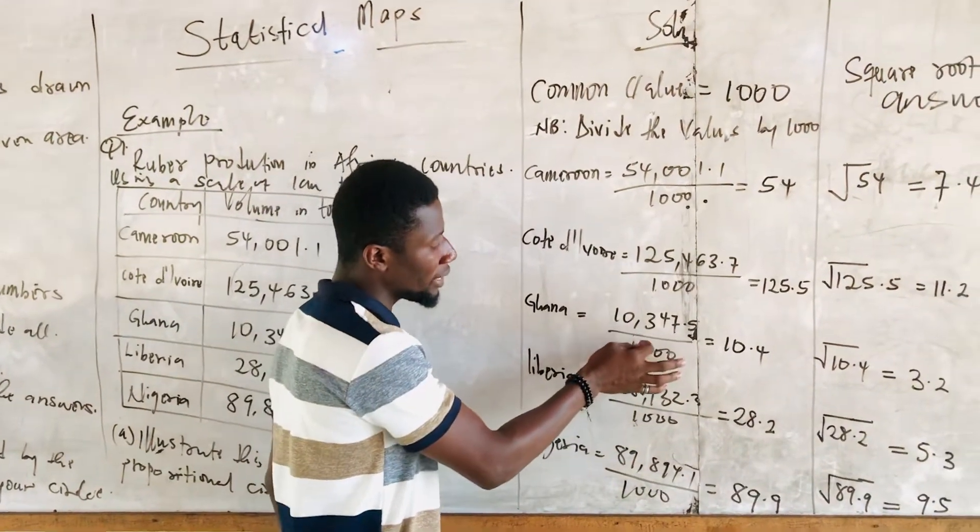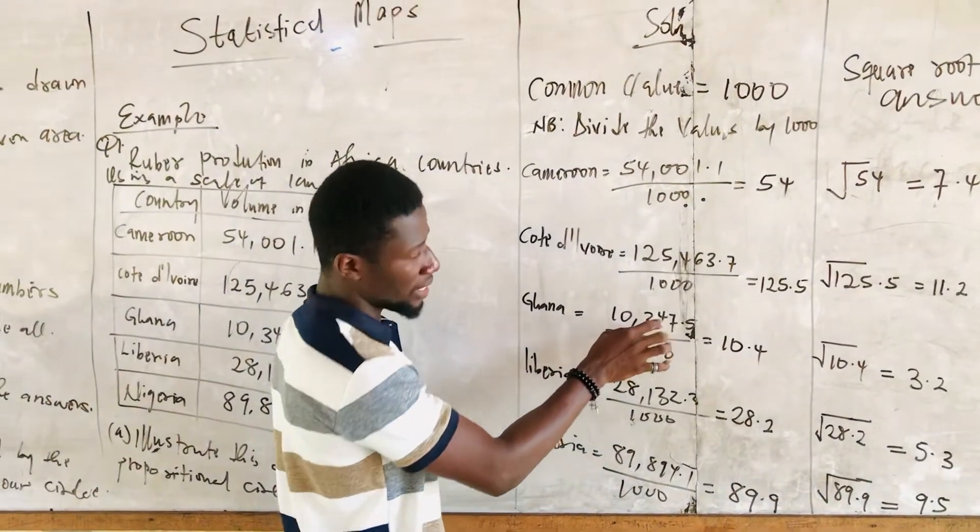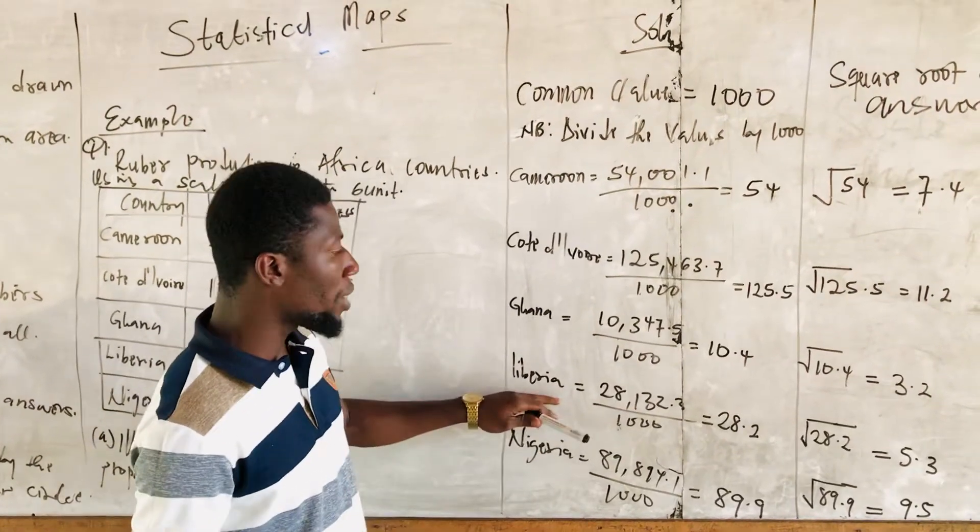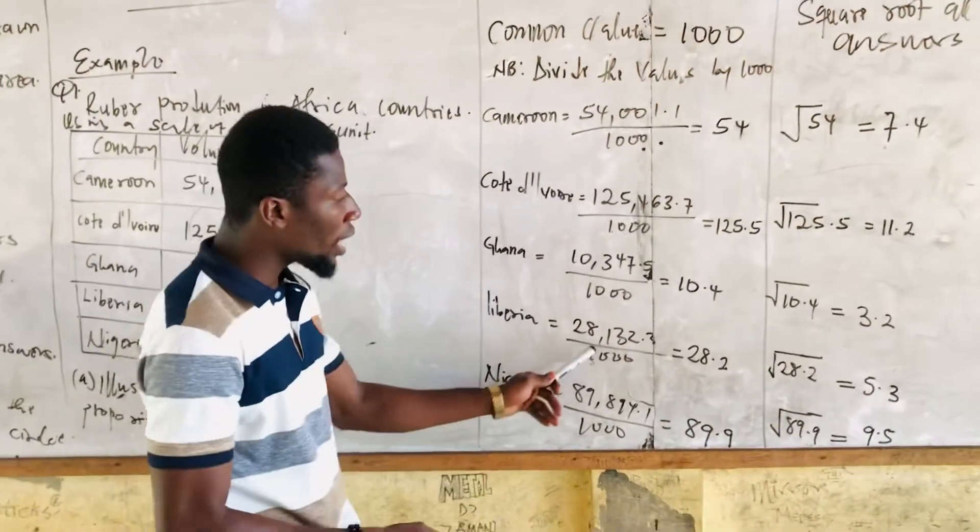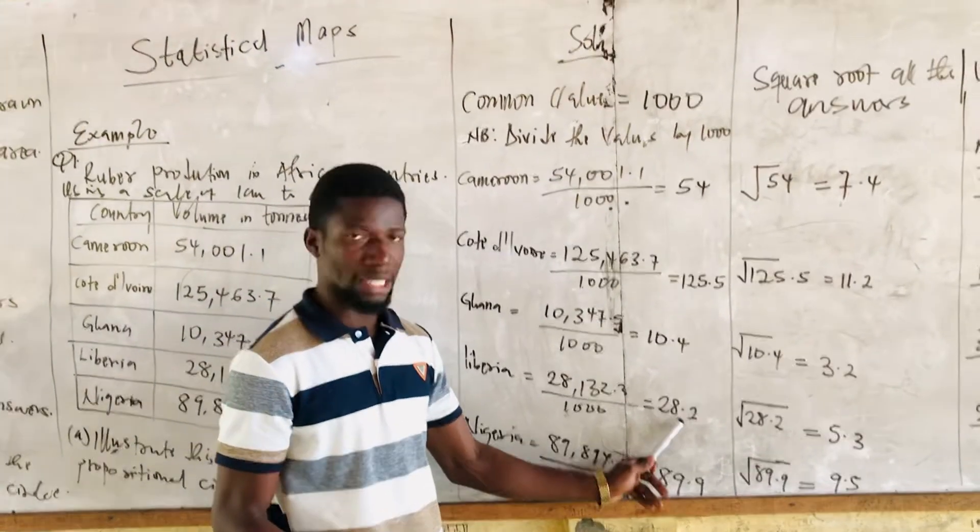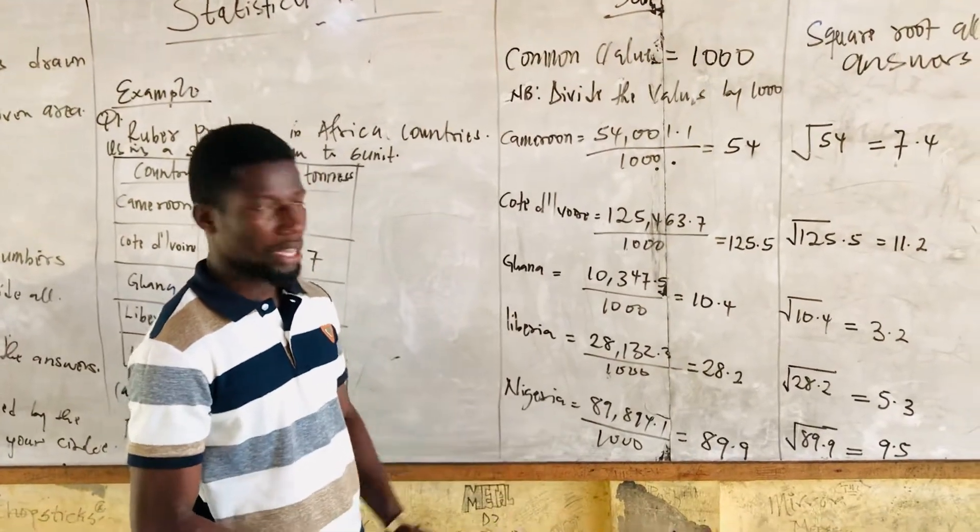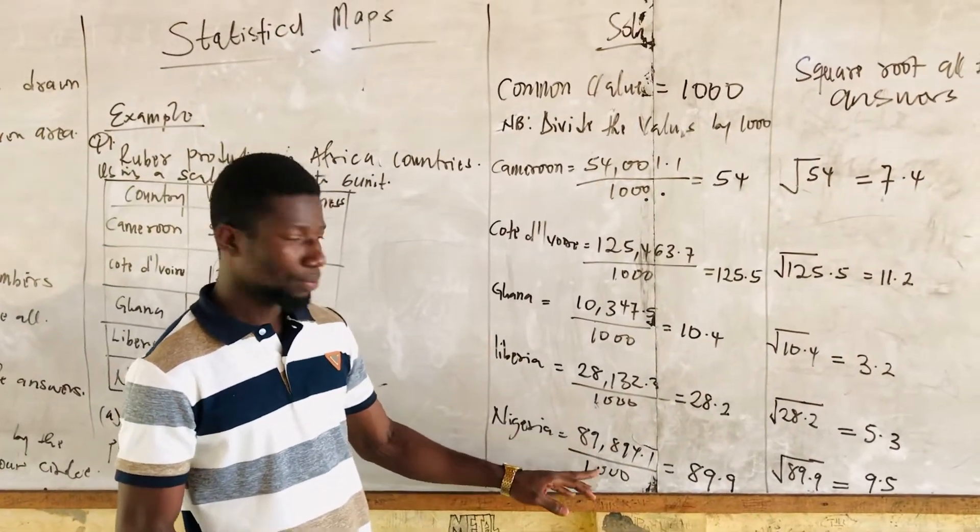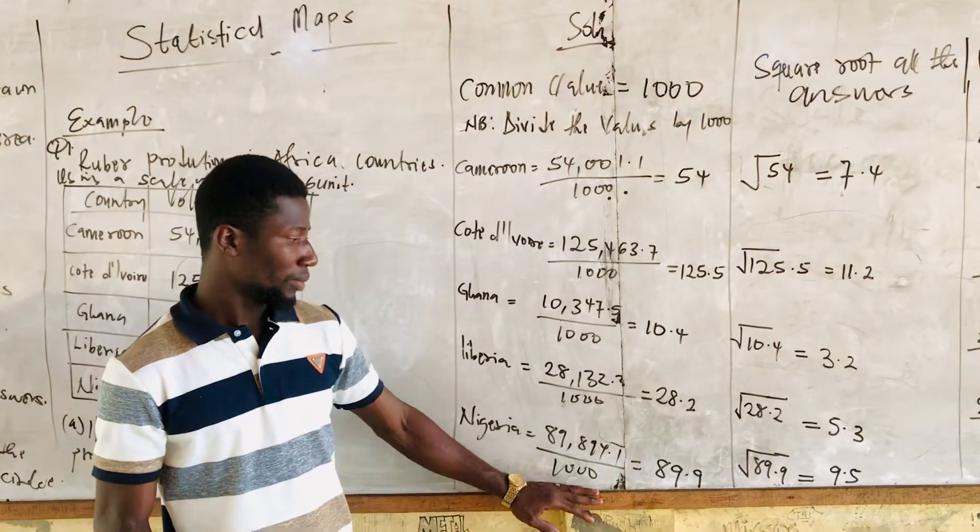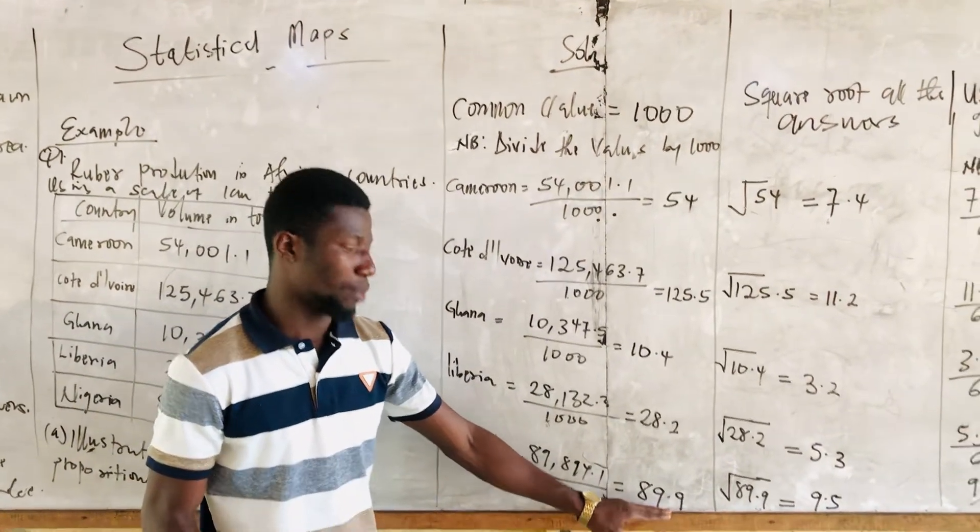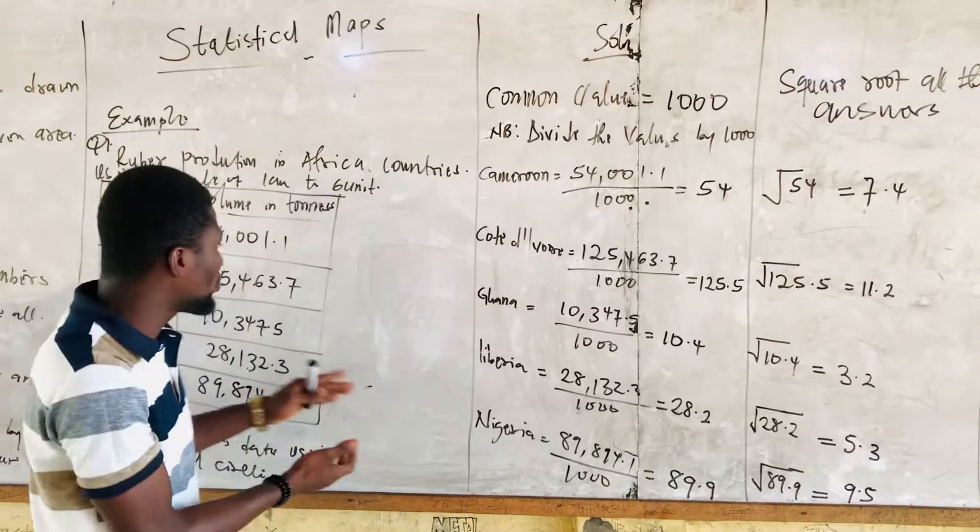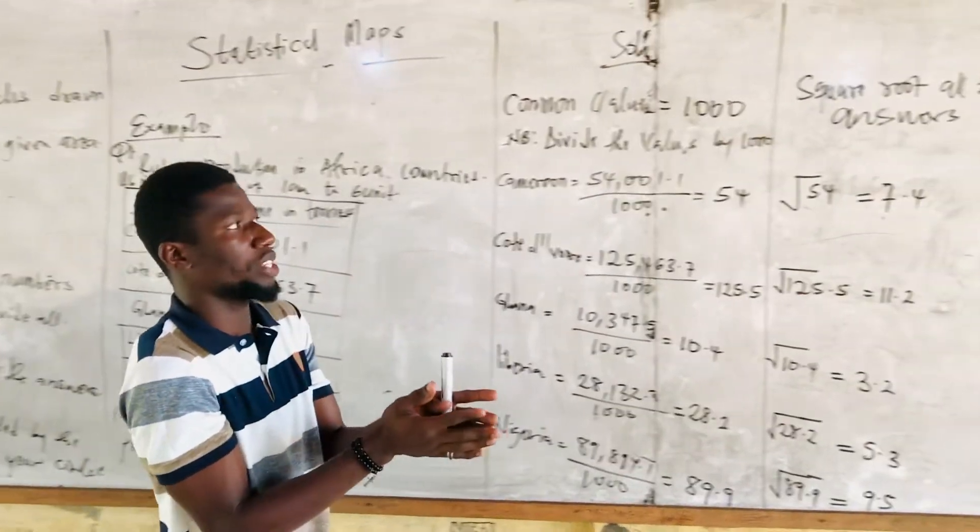Then we come to Ghana: 10,347.5 divided by 1,000, we are getting 10.4. We come to Liberia: 28,132.3 divided by 1,000, we are getting 28.2. Nigeria: 89,894.1 divided by 1,000, we get 89.9. These are the values we get after dividing by a common value to make these values simpler or smaller to calculate with.